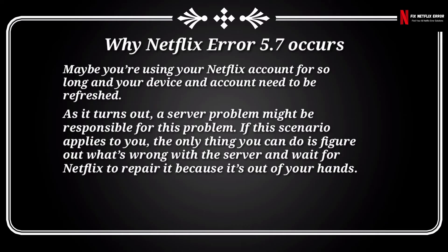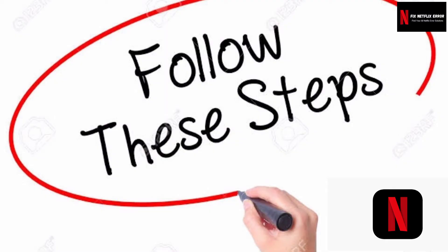So, those are the reasons why you might be getting error code 5.7 — 'There is a problem playing the video.' Now that you know all the causes behind this error code, here are some troubleshooting steps to fix Netflix error 5.7.